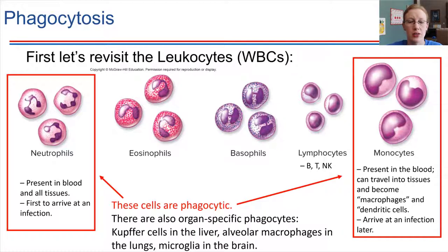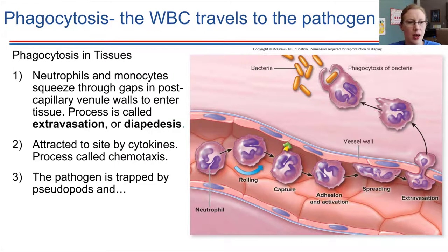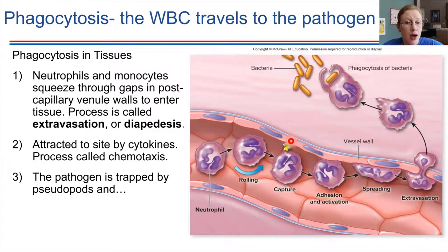So let's come and focus in on phagocytosis again. Neutrophils arrive first; monocytes or macrophages arrive a little bit later. How is phagocytosis initiated? It needs to be a specific event — something that is specifically targeted towards the foreign object, the foreign pathogen. Let's start in the bloodstream here. We have these cells flowing through a blood vessel, making their way into a capillary — just a single layer with very thin walls.